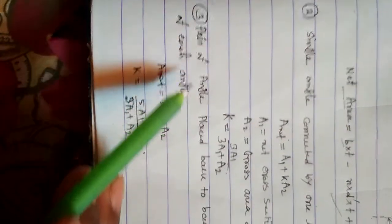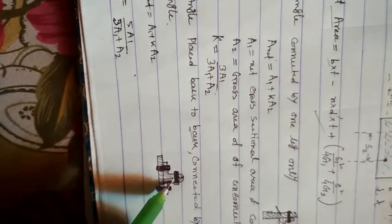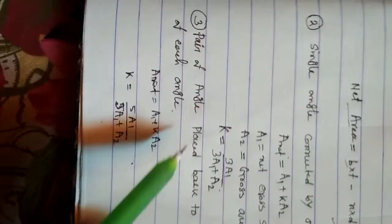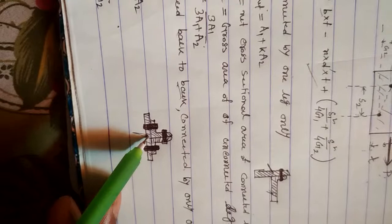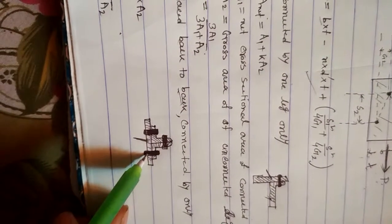Now in the case of a pair of angles placed back to back — this is one angle and this is another angle, placed back to back and connected by only one leg. Here is the gusset plate, and for each angle, one leg is connected with the gusset plate.